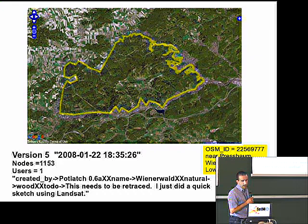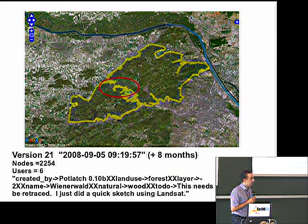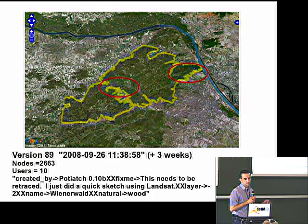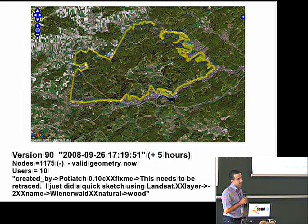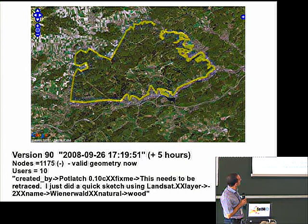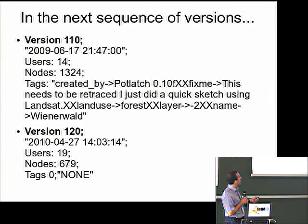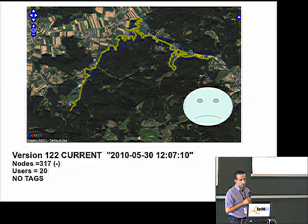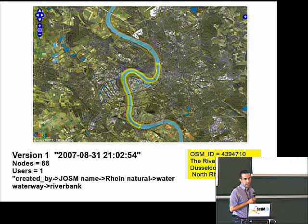The second example is from Austria. What I want you to keep your eye on is the tags. One tag just seems to hang around endlessly. There's a self-intersection if we zoom in. Another self-intersection appears. A comment about doing the sketch using Landsat is still present, and then we have valid geometry. In the next sequence, all the tags are deleted, and the current version is actually a broken polygon — or a broken something.